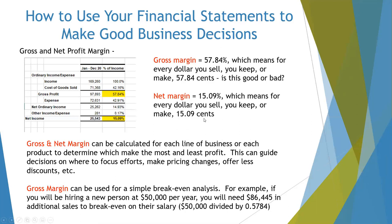Your net margin is basically the bottom-line net as a percent of your total sales. In this example, for every dollar you sell, you keep or make 15.09 cents. Again, we don't know if this is good or bad — we need to look at history as well as industry peers. You can calculate your gross and net margin for each line of business or even each product or service to determine which make the most and least profit. If something is not making a lot of profit, this will guide your decision — maybe you change your prices, change some processes, stop that line of business, or focus more on what's very profitable.